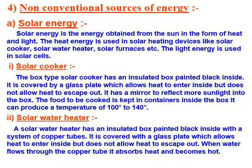The box type solar cooker has an insulated box painted black inside. It is covered by a glass plate which allows heat to enter inside but does not allow heat to escape. It has a mirror to reflect more sunlight into the box. The food to be cooked is kept in a container inside the box. It can produce a temperature of 100 to 140 degrees Celsius.